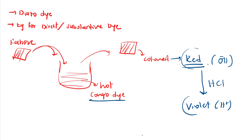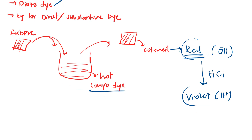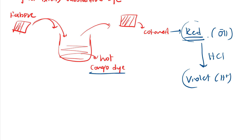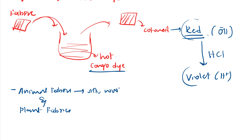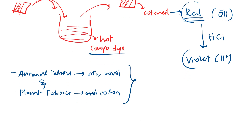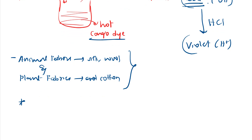Congo red is a diazo dye and a good example of a direct or substantive dye. With a direct dye, we take fabric and add it directly to hot Congo red dye, and the fabric becomes colored upon drying. It can be used for both animal fabrics (silk, wool) and plant fabrics (cotton), and was initially used extensively for cotton, to which it binds very strongly.